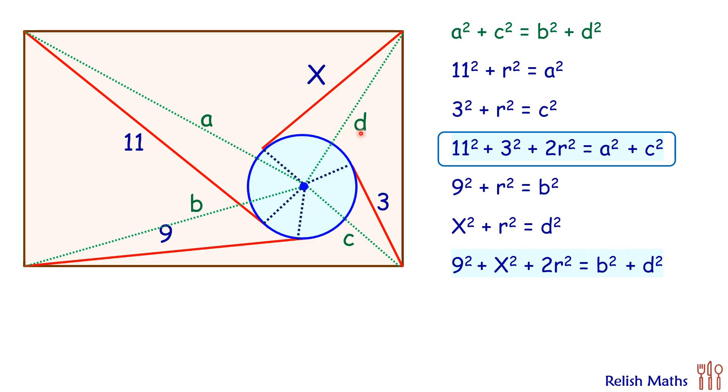Let's add these two equations. So we will get this particular result. Now here if we look, we have got a² + c² and b² + d². Now we know by British Flag Theorem that a² + c² is equal to b² + d². So comparing as right-hand side is equal, thus comparing the left-hand side, we'll get this particular equation.